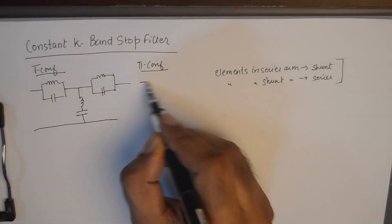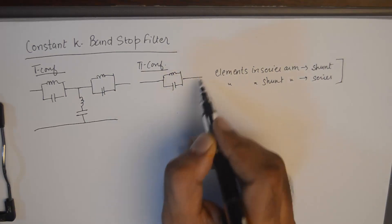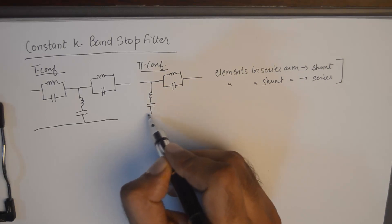And for PI configuration you will need to put both the elements in series arm. And in shunt arm you will put both the elements in series.